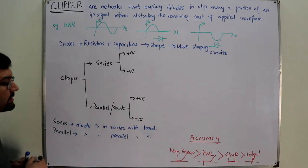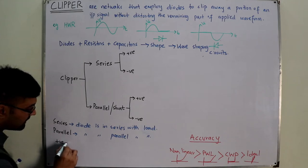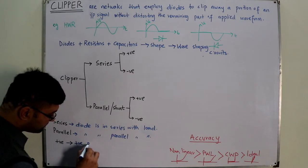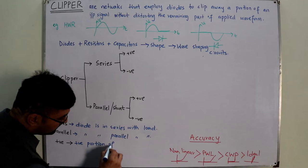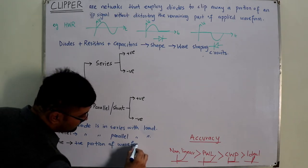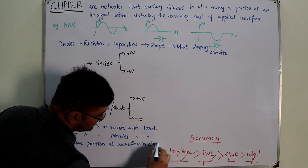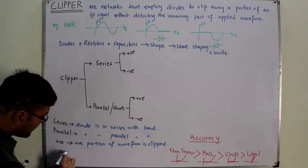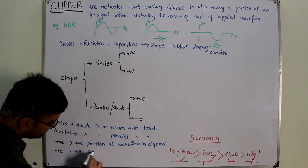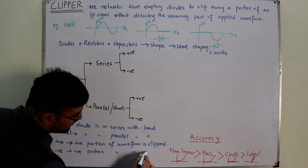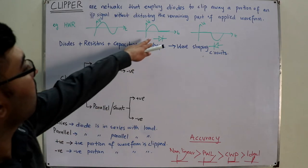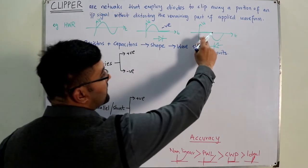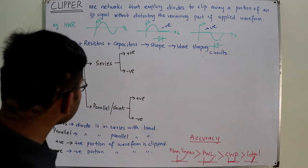On top of the series/parallel classification, in each you have positive clippers and negative clippers. A positive clipper means the positive portion of the waveform is clipped. A negative clipper means the negative portion of the waveform is clipped. For example, in one waveform the negative portion has been clipped — that is a negative clipper — and in another the positive portion has been clipped — that is a positive clipper.